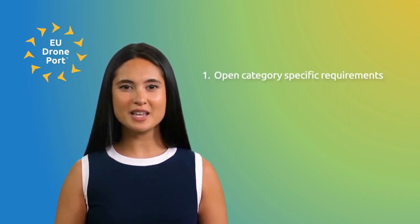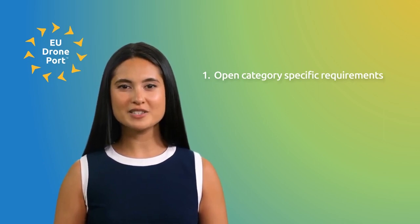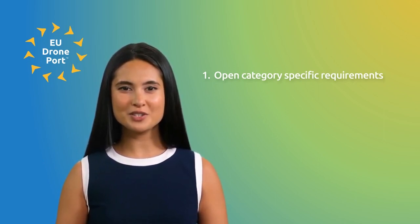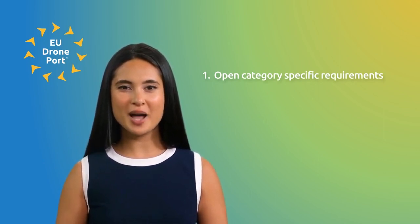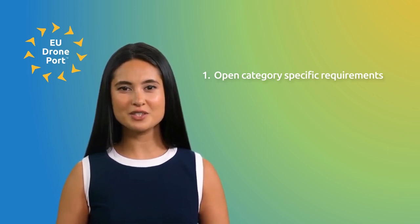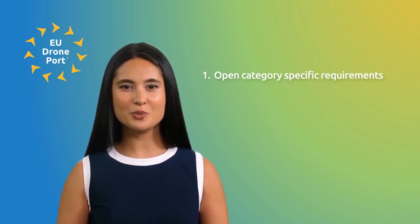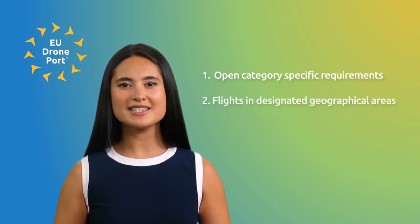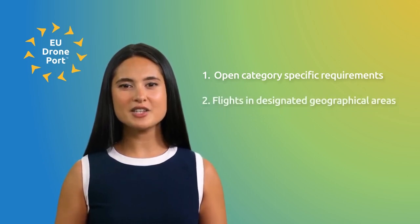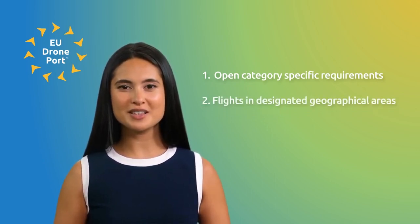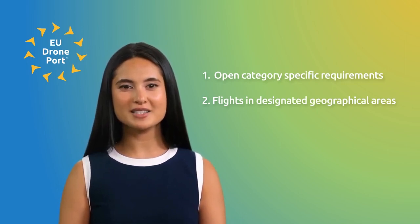specific requirements, including a minimum horizontal distance from populated areas, a maximum altitude, and pilot training and examination for subcategory A1/A3. Option 2: flights in designated geographical areas with alternative safety measures such as specific training, internal rules, and